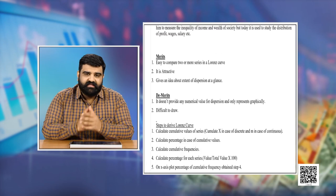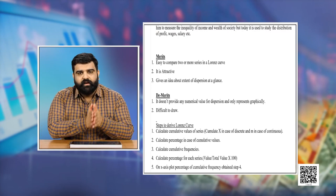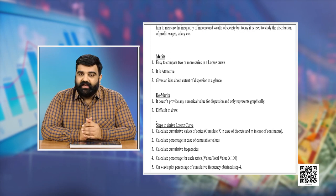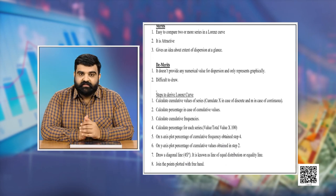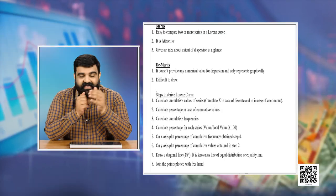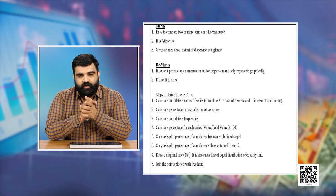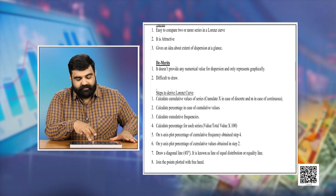The third merit is it gives an idea about the extent of dispersion at a glance — you can look at the series and gain an idea of which series is more dispersed. Now the demerits: the first demerit is it doesn't provide any numerical value for dispersion and only represents it graphically. The second demerit is it is very difficult to draw, as it involves a number of calculations.